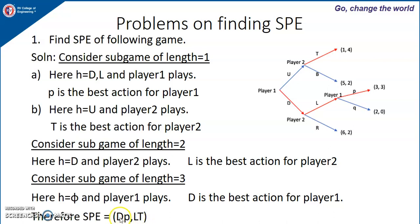Therefore, the sub-game perfect equilibrium is (dp, lt). This means player 1 plays action d initially, player 2 takes action l after history d, player 1 then takes action p, and player 2 takes action t. This also accounts for what would happen if player 1 were to deviate from action d to u.